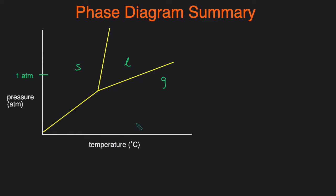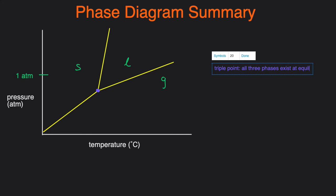Some other points you need to know: we have the triple point, which is the intersection of the three lines. The triple point is the point at which all three phases exist at equilibrium — meaning at that particular pressure and temperature, solid, liquid, and gas will all exist simultaneously.